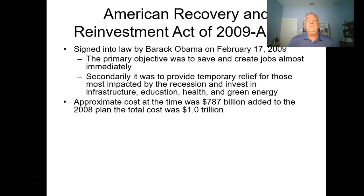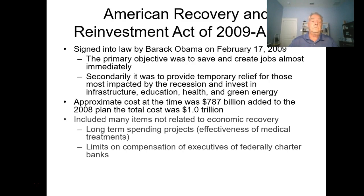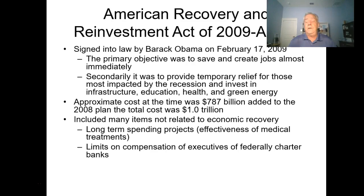The cost of the bill was about $787 billion. Adding that to Bush's plan of roughly $300 billion, the total project to bring the economy back and reduce unemployment was approximately $1 trillion. However, the bill included many items unrelated to economic recovery—long-term spending on medical treatments, green energy, and for some reason it limited compensation of executives at federally chartered banks, likely included to get it past more liberal members of the Democrat Party, who at this point controlled the White House and both houses of Congress.